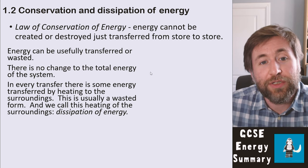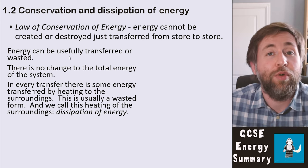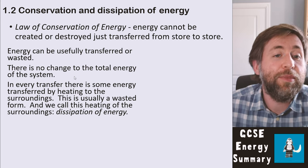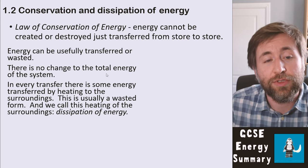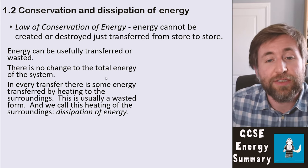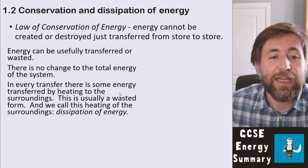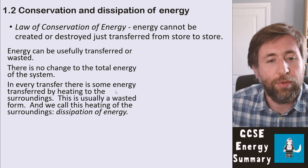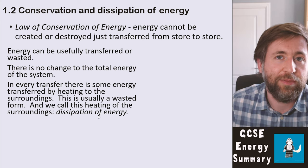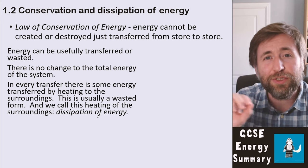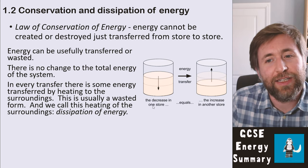There are two ways energy can be used: usefully or wasted. Useful refers to what we wanted an appliance to do. There's no change to the overall energy — that's what the law of conservation of energy says. In every transfer, some energy is transferred as heating to the surroundings; we cannot avoid that. This heating of the surroundings is called dissipation of energy — it spreads out and becomes in too small quantities to be used again.